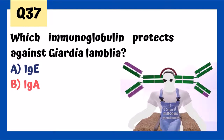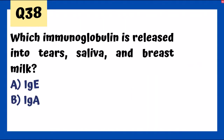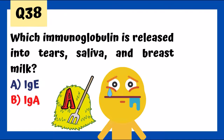IgA is released into tears, saliva, and breast milk. It's secreted as a dimer. The mnemonic: a farmer with hay (for IgA) crying — reminding us of tears — and salivating, trickling down toward his breast for breast milk.